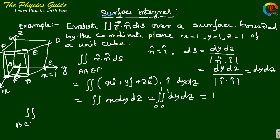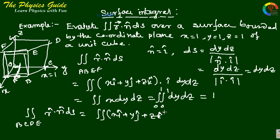Similarly, for surface BCDE, r dot n-hat ds equals the integral of (x*i + y*j + z*k) dot j-cap. The normal direction of BCDE is along the y-direction, that is j-cap. The area element ds is along the x-z plane, giving dx dz, with limits from 0 to 1 for both. This obviously also gives 1.